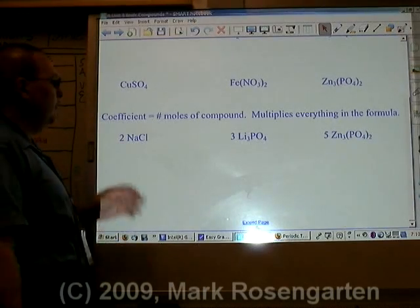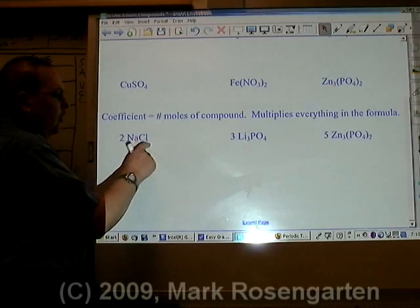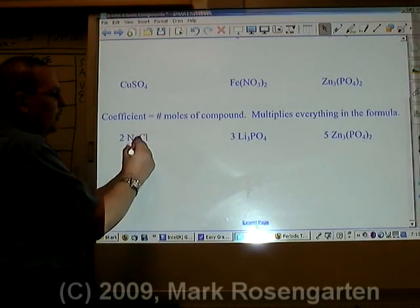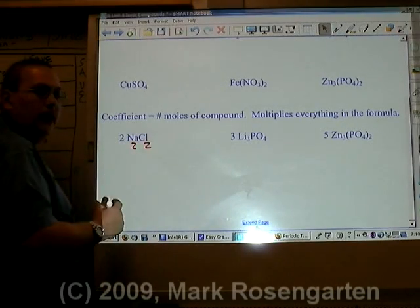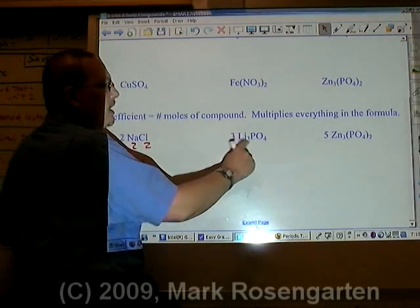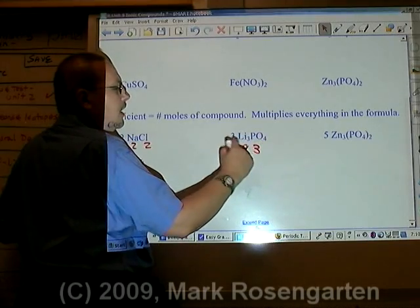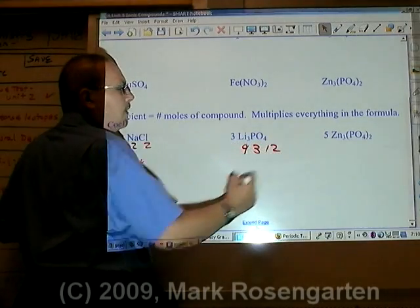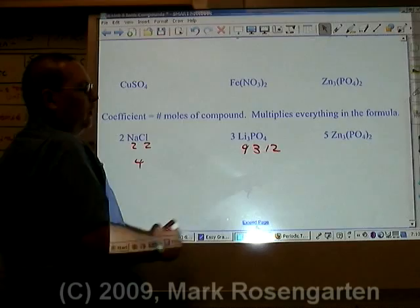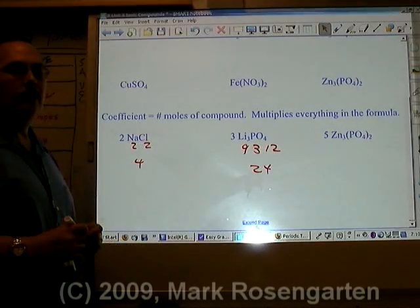Putting a coefficient in front multiplies everything that comes after it. Therefore, there's a grand total of two moles of sodium and two moles of chlorine for a total of four moles of atoms. There are nine lithiums, three phosphoruses, three times four is twelve oxygens for a grand total of twenty-four moles of particles.